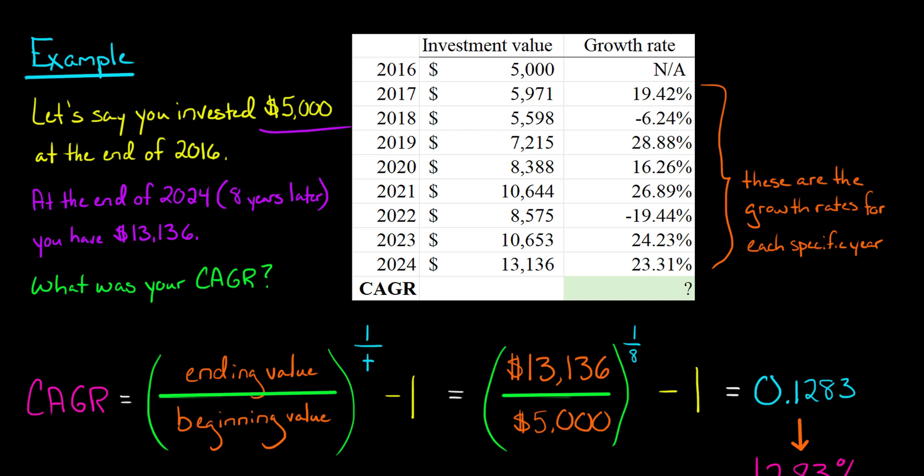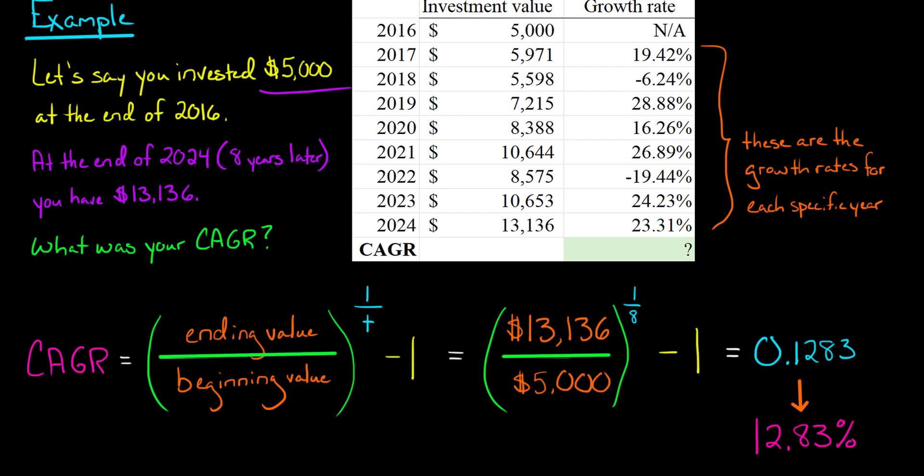That's what we're going to raise this amount to. And then we're going to subtract one. So the number we get is 0.1283. And I've rounded that. But we want to convert that to a percentage. So 0.1283, when expressed as a percentage, is 12.83%. So that is the compound annual growth rate.